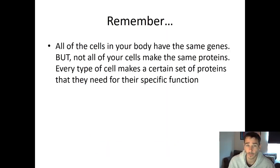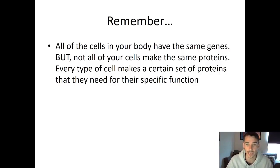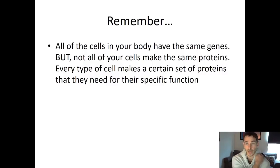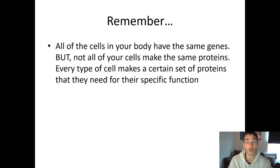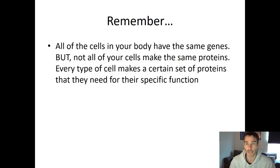All of the cells in your body have the same genes, but not all of the cells make the same proteins. Every type of cell makes a certain set of proteins that they need for their specific function. So you have an eye cell, a brain cell, and a skin cell — they all have the same DNA, but they don't use the genes the same way. The reason why cells can perform different functions is because they use the genes differently, even though they all have the same set of genes.